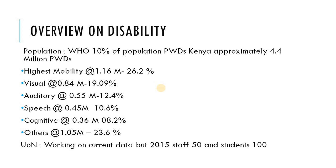I'll begin with a brief overview on disability in our country. The population of persons with disabilities in Kenya is approximately 4.4 million persons. These are categorized as follows: the highest being the mobility disabled at 1.16 million, which is 26.2%. Secondly, visual disabilities at 0.84 million, which is 19.09%.